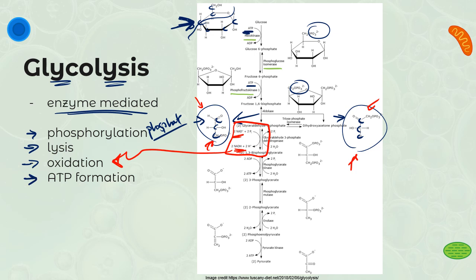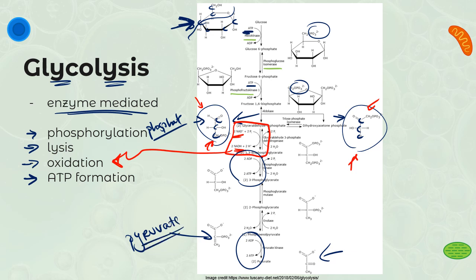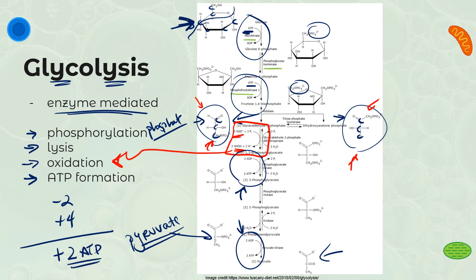Last but very much not least, we have some ATP formation. We're actually going to make ATP — two here and two more — before we get to our final products, which are two molecules of pyruvate. Pyruvate is the final product of glycolysis. We make four ATP molecules total; we needed two to make all this happen, so we get a net gain of two ATPs. We're going to talk when we get to anaerobic respiration about how a little bit of ATP is way better than no ATP.